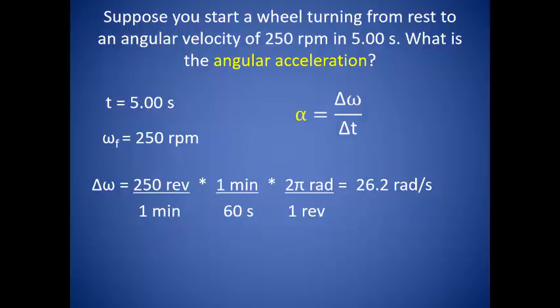So now we know our angular velocity in radians per second, and we know our change in time. This is good because we can plug those into our angular acceleration equation, and we come up with 5.24 radians per second squared.